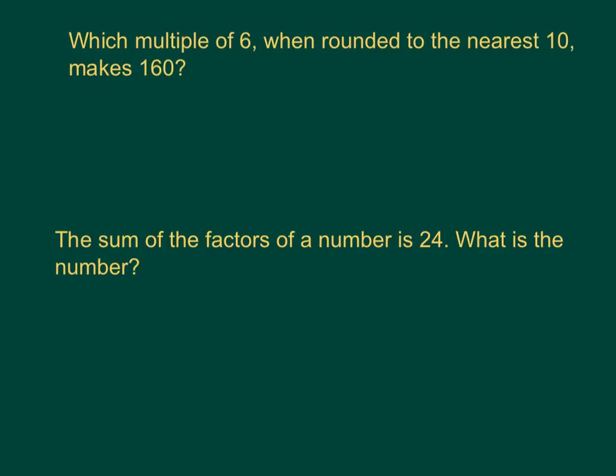Now have a go at these two questions to finish, the last one being particularly difficult. Now for the first question, I know the numbers must be in the window 155 to 164, as when rounded to the nearest 10, they make 160. Now I know that 30 times 6 is 180, so that must be a multiple of 6. If I take away 18, again another multiple of 6, that leaves me with 162.